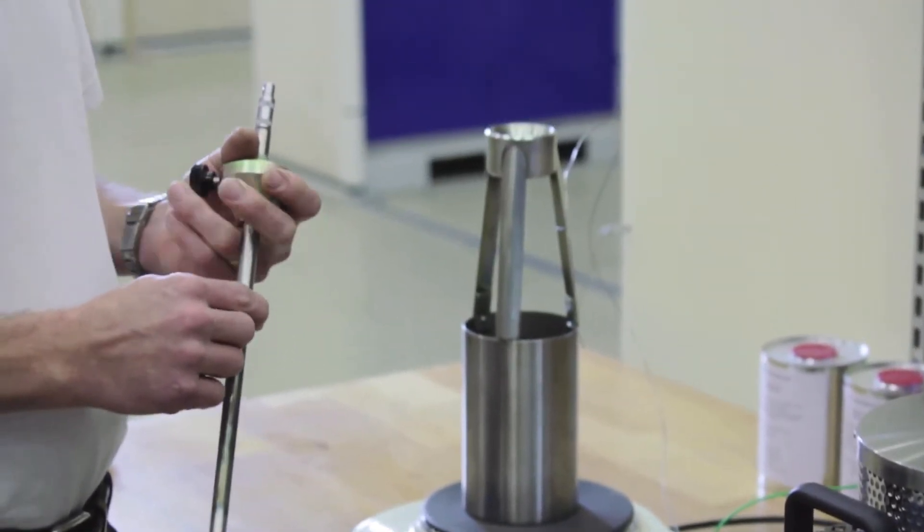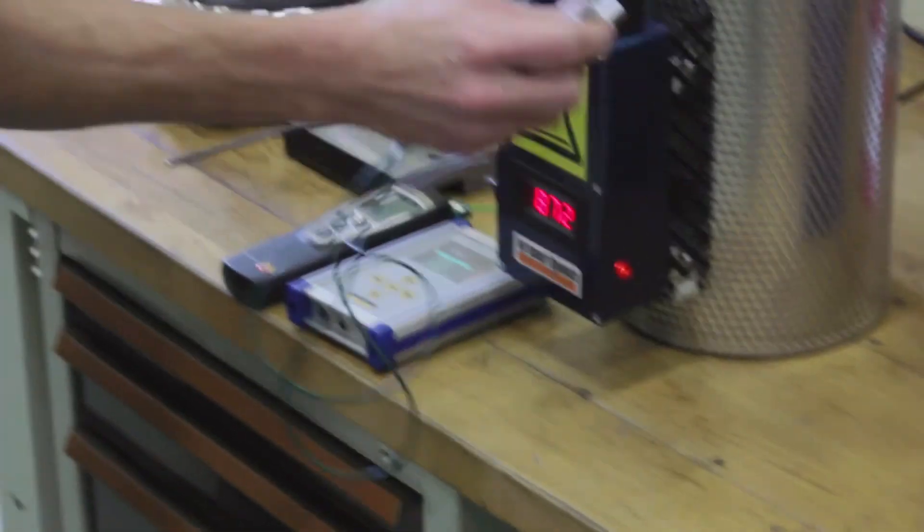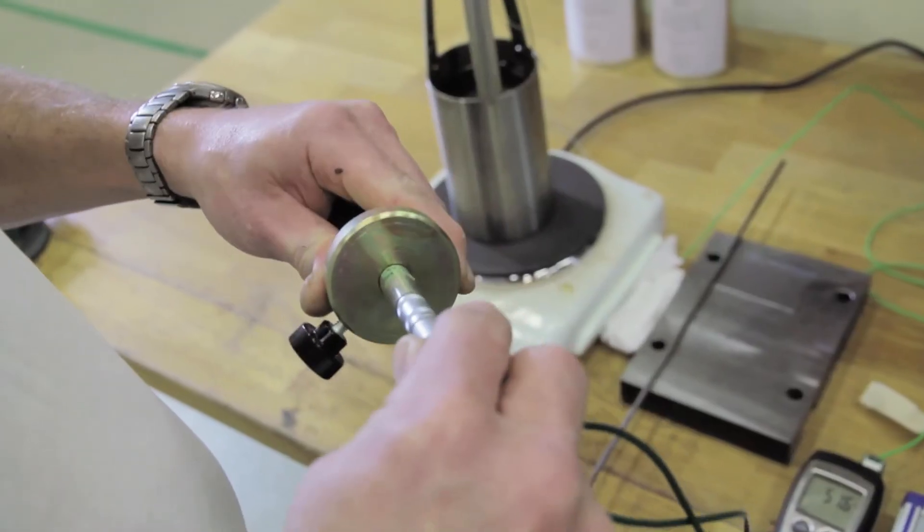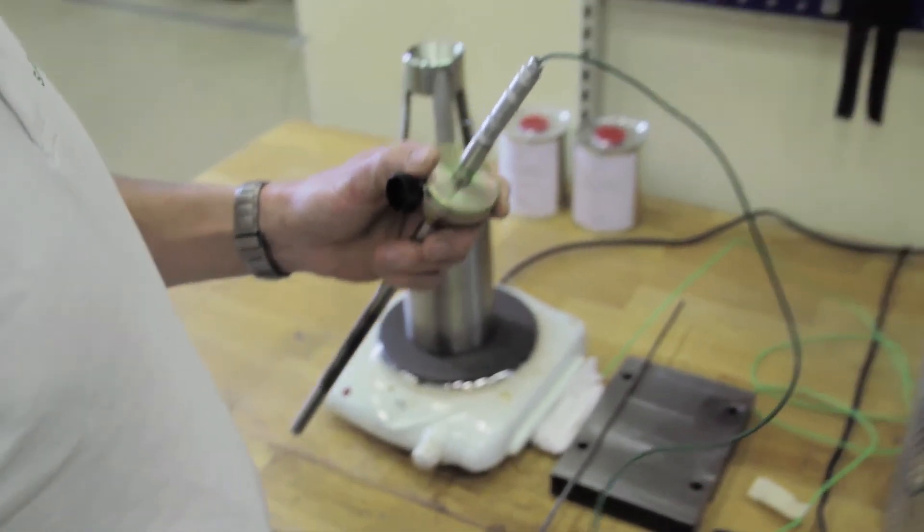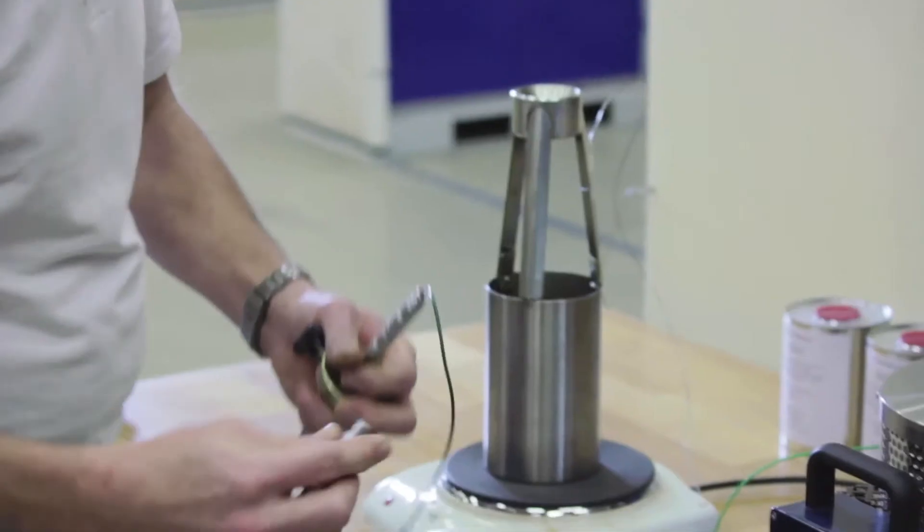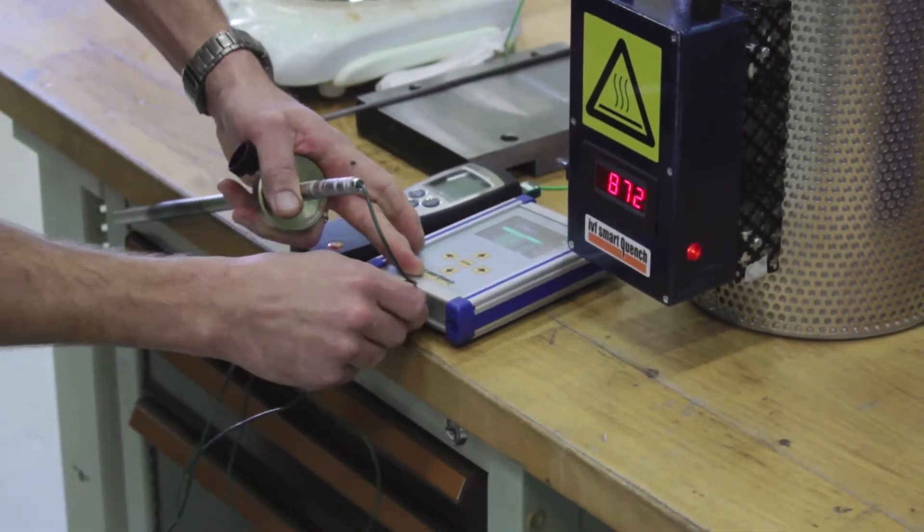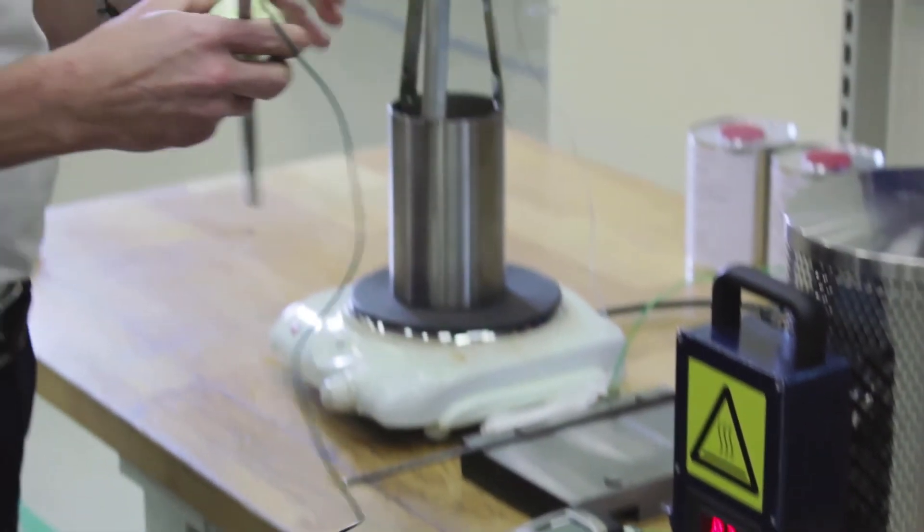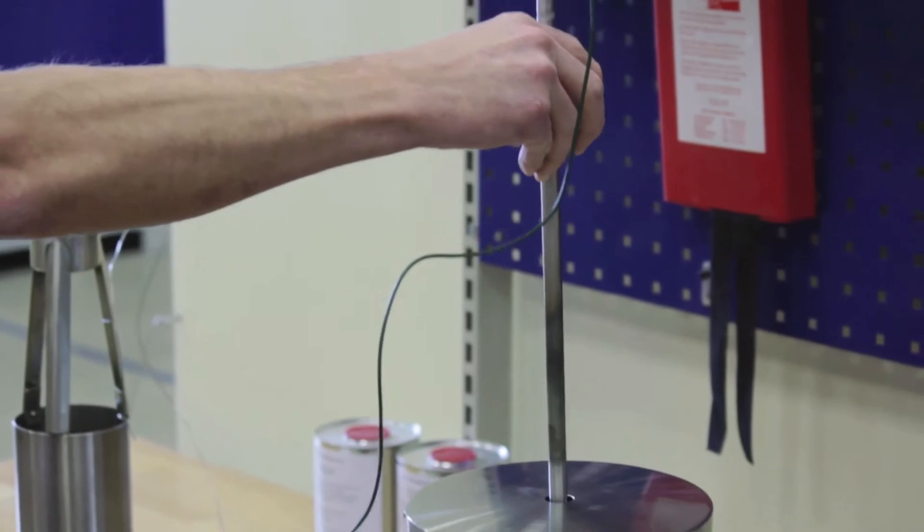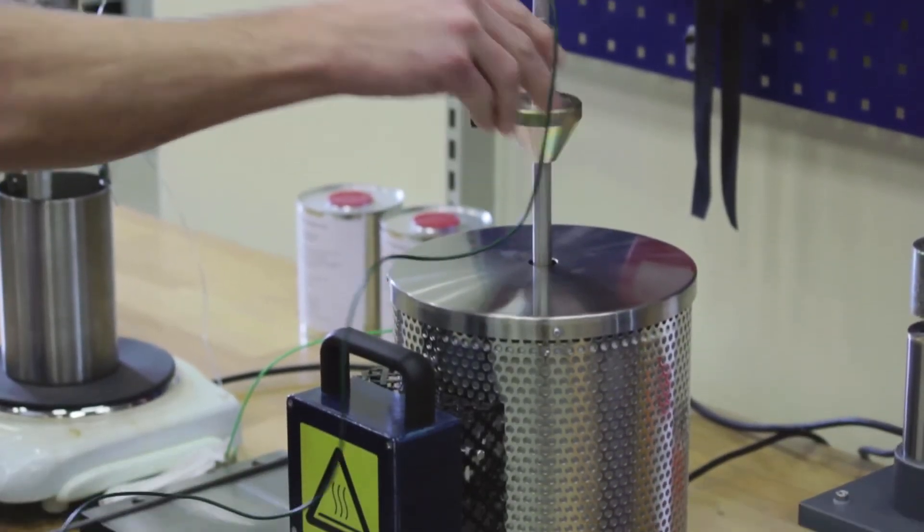According to standards for testing quenching media, the measurements shall start at 850 degrees Celsius. The probe shall not be heated to more than 855 degrees Celsius. We recommend heating the probe to the upper limit at 855 degrees since it cools down a few degrees during movement from furnace to the quenching media.